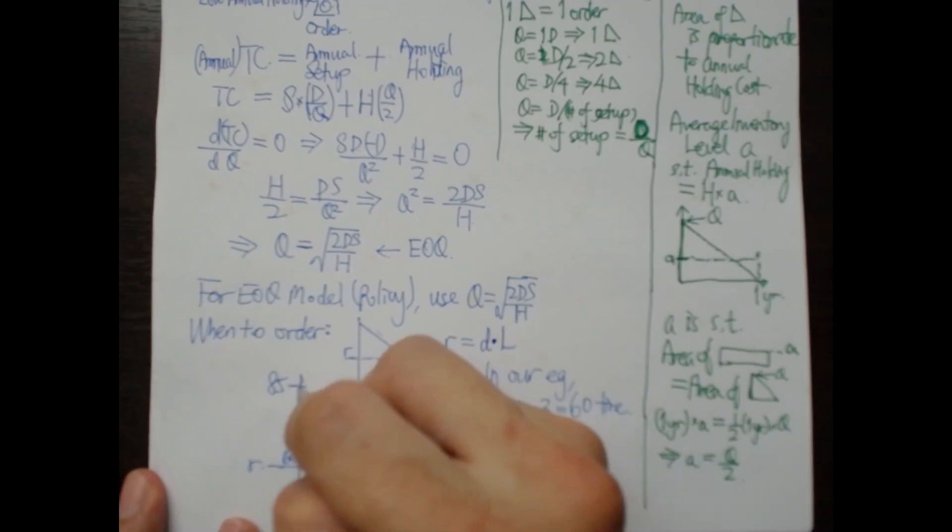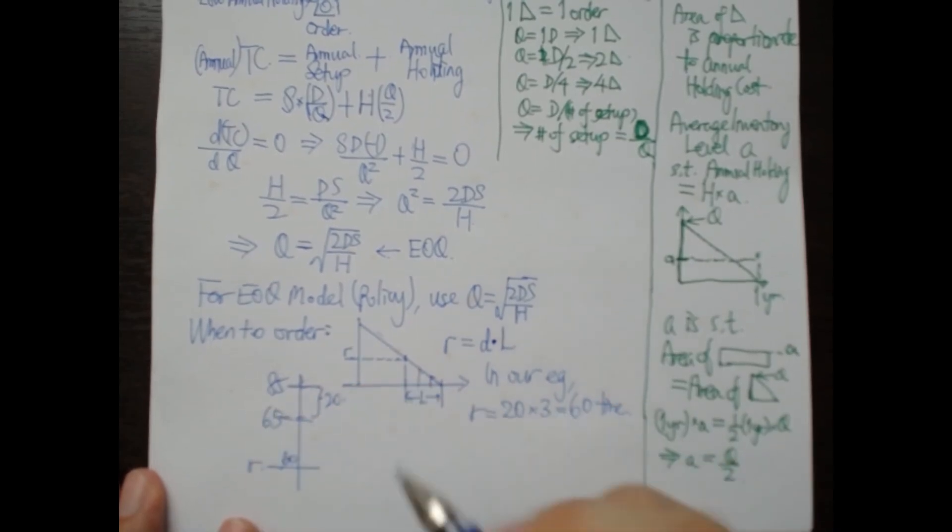We are saying that our current level is 85 tires. Somebody bought 20 tires. After one day we get 65 tires now. That's a bit out of proportion, but the idea is we bought 20 tires and so now we are left with 65 tires. Do we reorder?